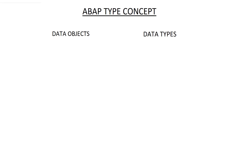One important point here is that all ABAP statements you write can only work with data that is locally available in the program. For example, if I want to process data from the database and show it to the user on an output screen, I cannot write an ABAP statement to directly work with data in the database. I have to actually bring the data from the database, store it in my program memory, and then use ABAP statements to access it locally.